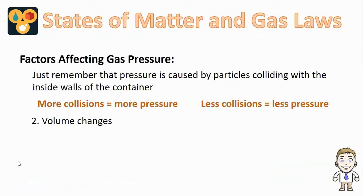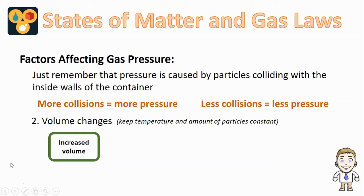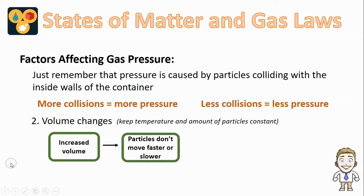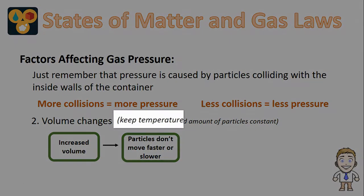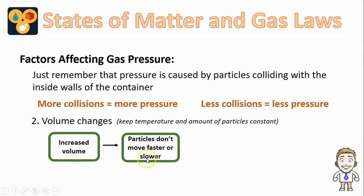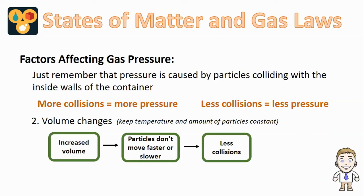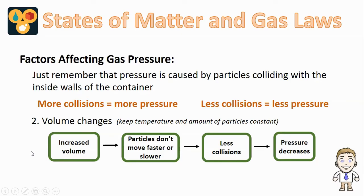Now let's look at how a change in volume can affect pressure. We'll keep other variables constant — temperature stays the same and the amount of particles stays the same. If you increase the volume, a common mistake is thinking that particles are going to change their speed. Remember, we're keeping the temperature the same, so particles don't move faster or slower, but they are in a larger space. Because they're in a larger space, they have farther to travel between hitting the walls, so they're going to be colliding less. And because they're colliding less, we're going to see less pressure.